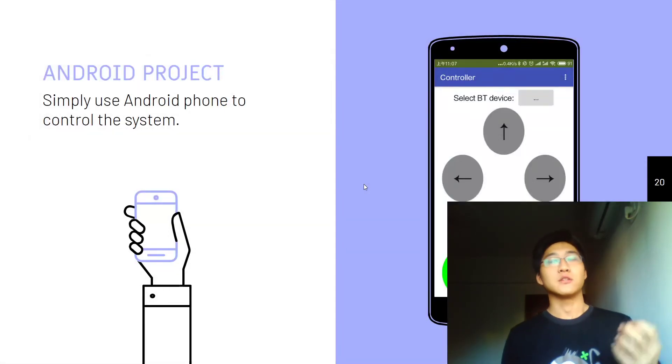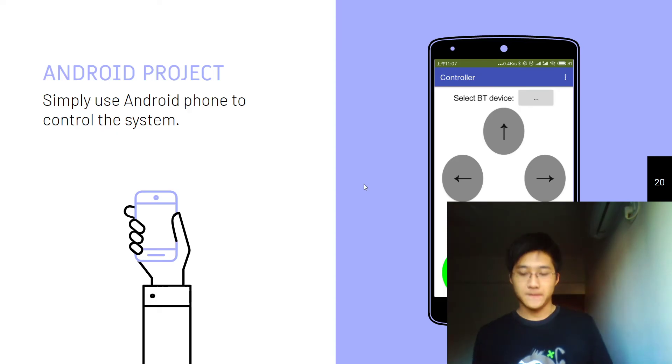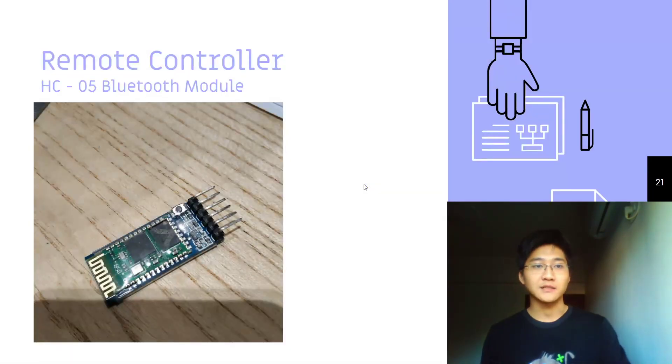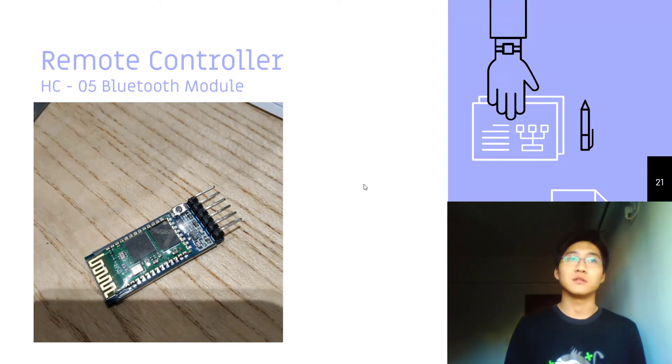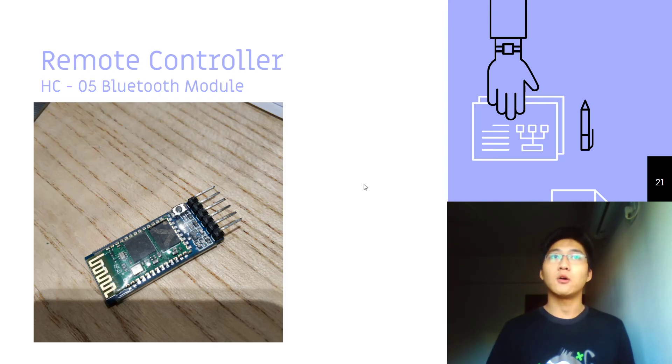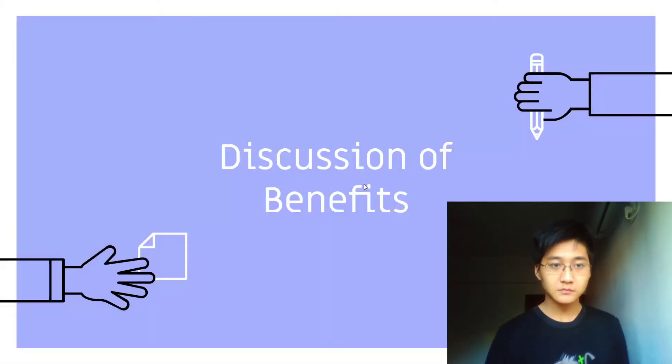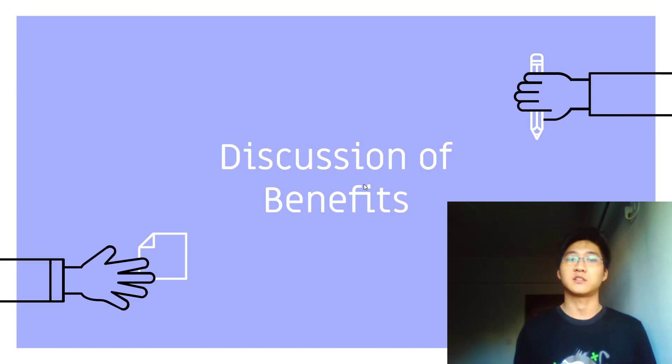And then the last one, the user interface. We will use Android project as an example. So this is the control panel, very intuitive and very simple. And then we will need a Bluetooth device, HC05 Bluetooth module. So our users, both caregivers, the family, or even the elder themselves, can use their mobile phone to connect to the device and control it. And then I will move to Leo to discuss the benefits.